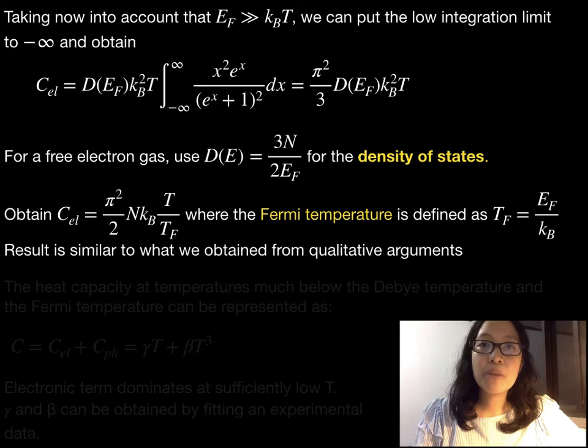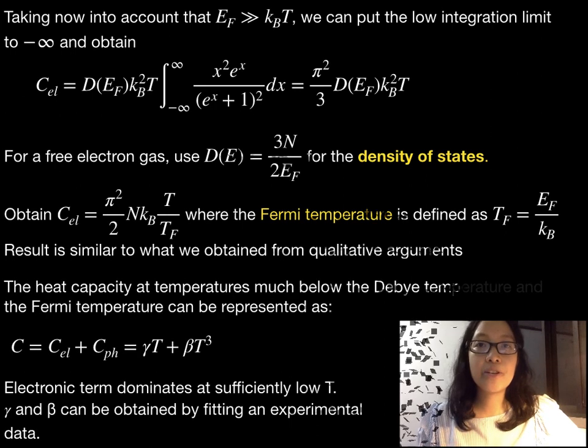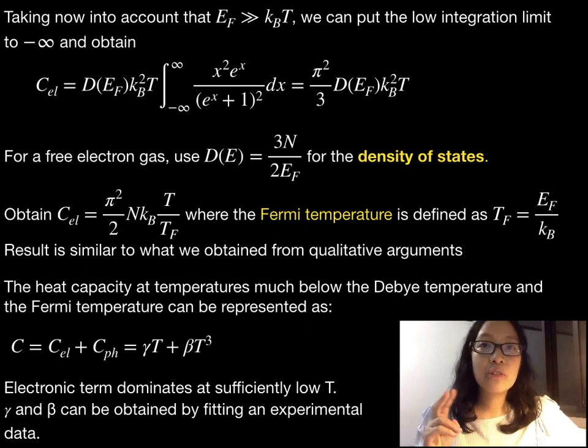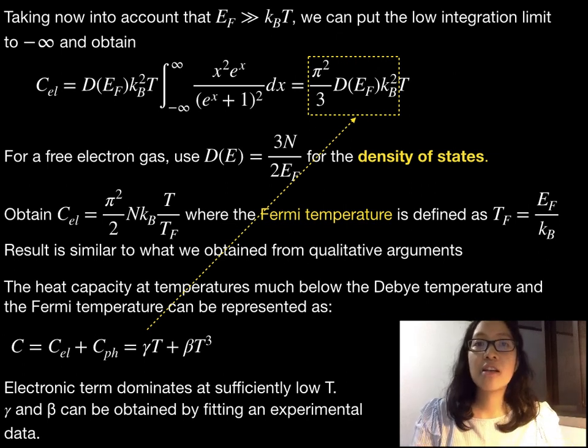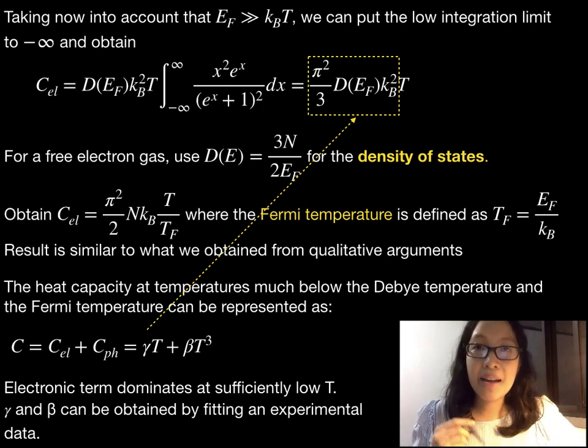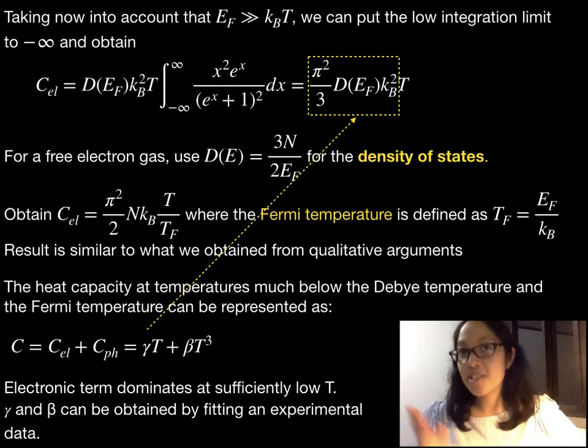At temperatures much below the Debye temperature and the Fermi temperature, the heat capacity is the sum of two types, the electronic heat capacity and the heat capacity due to phonons. The constants γ and β are characteristic of the specimen. They can be obtained by experimental fitting of data as we shall see next.